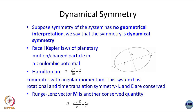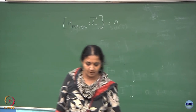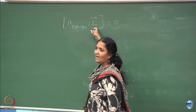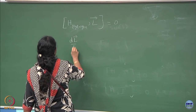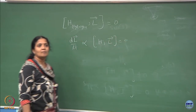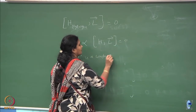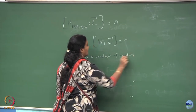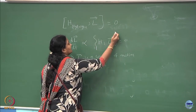Angular momentum is conserved because it is a spherically symmetric potential V(r). For the hydrogen atom you can show that the Hamiltonian commutes with all the components of the orbital angular momentum. Equivalently, we say angular momentum is conserved in classical mechanics by showing that dL/dt, which is proportional to the Poisson bracket of the Hamiltonian with L, is zero — implying that L is a constant of motion.